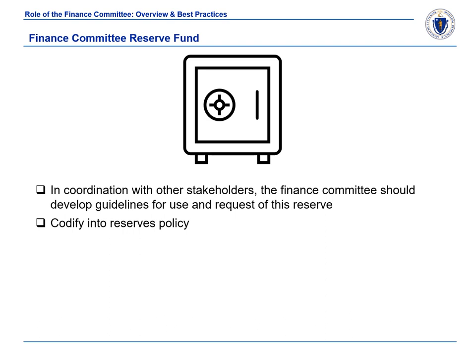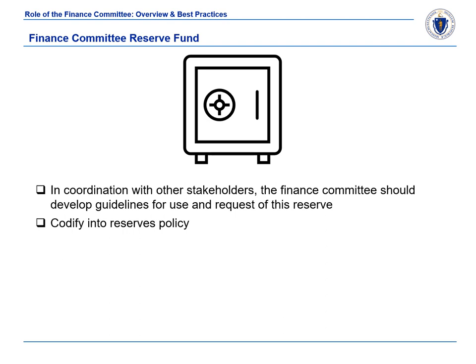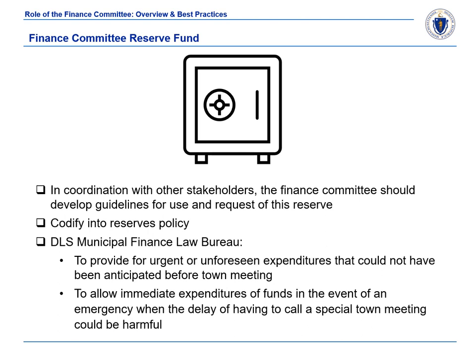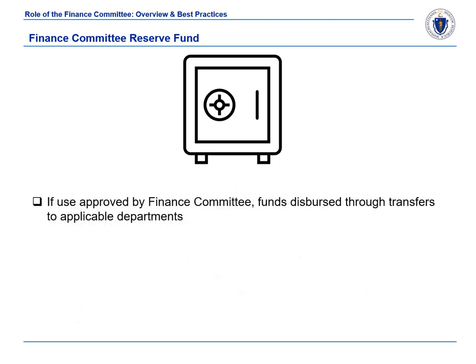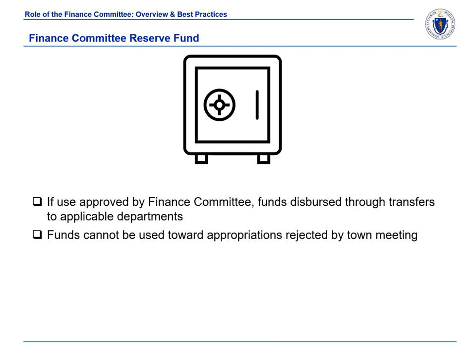DLS's Municipal Finance Law Bureau's opinion on when reserve fund transfers are appropriate includes: to provide for urgent or unforeseen expenditures that could not have been anticipated before town meeting, or to allow immediate expenditure of funds in the event of an emergency when the delay of having to call a special town meeting could be harmful. If the finance committee approves the use of its reserves, funds are dispersed through transfers to the applicable departments. The reserve fund should not be used to fund an appropriation that was rejected by town meeting.